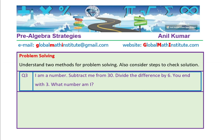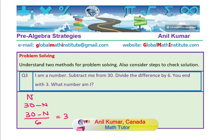Now, last question. I am a number — let's say n is the number. Subtract me from 30, that means from 30 I subtract the number. Then divide the difference — this is called the difference — divide the difference by 6. So 30 minus n was the difference, and we divide by 6. You end up with 3.